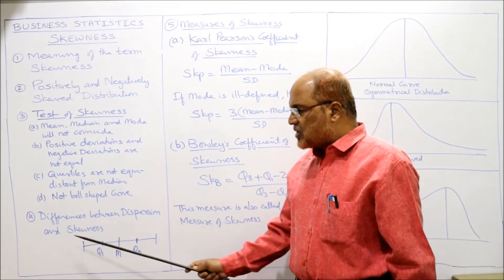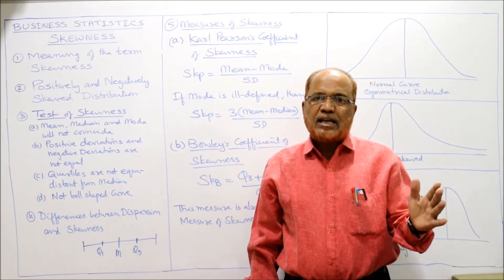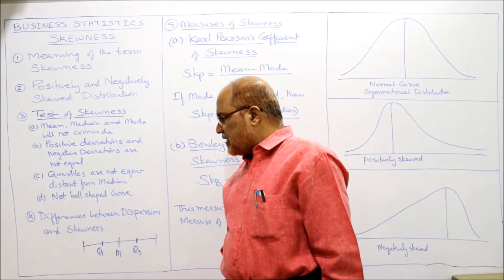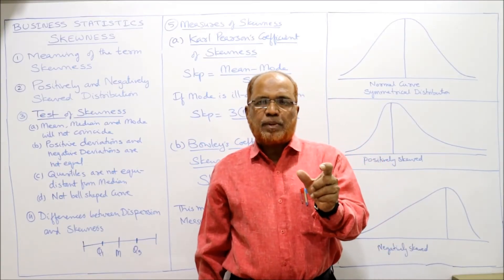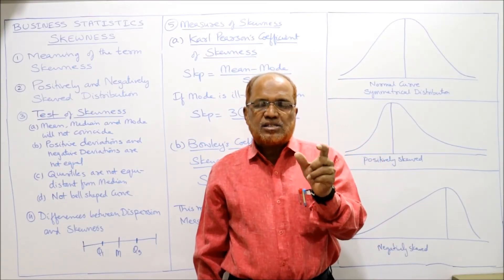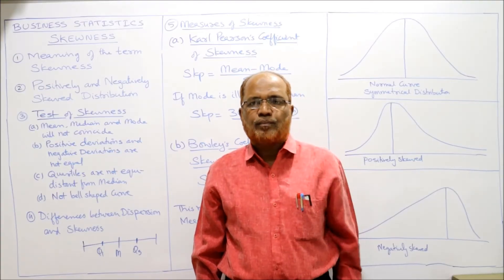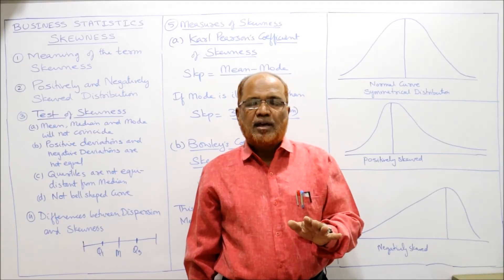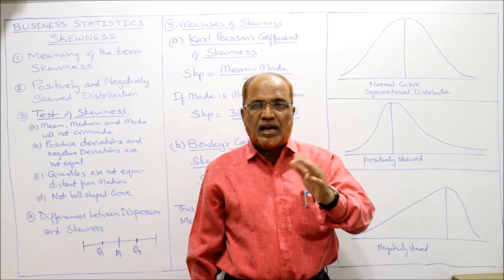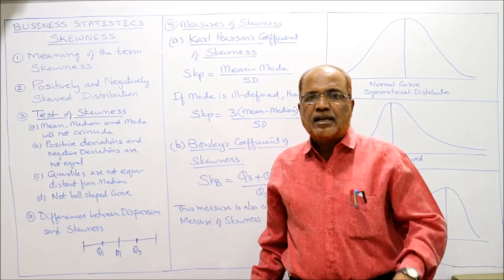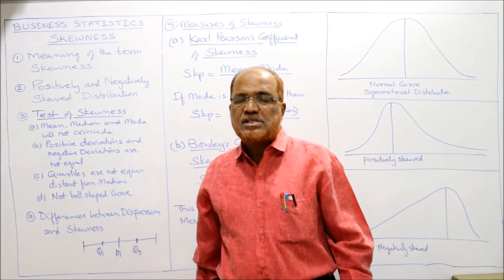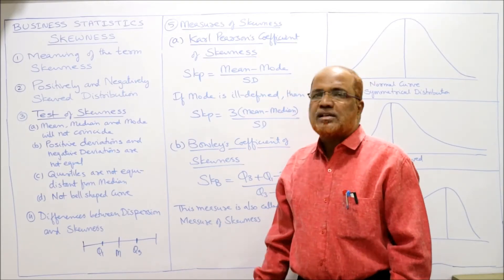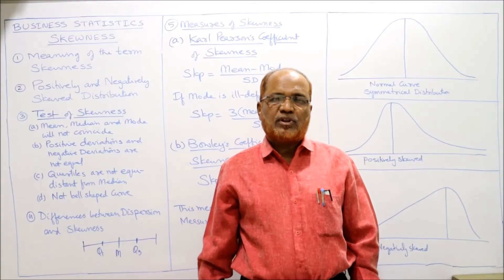Now, the differences between dispersion and skewness: these two techniques are entirely different. Dispersion explains the scatterness of all values around the central value — how far the other values are spread from the central value. It does not consider whether values are less than or greater than the central value; it only measures how many values are spread from the central value. Skewness shows the shape of the distribution.